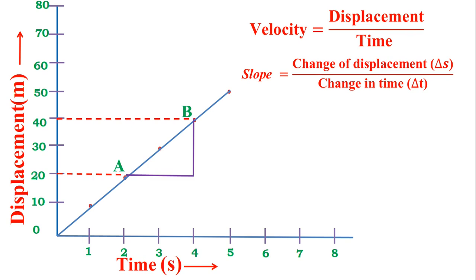This right-angle triangle is triangle ABC. If we plot a dotted line from A towards the time axis, the x-axis, it shows that A is at 2 seconds, and the body is at position B at 4 seconds.